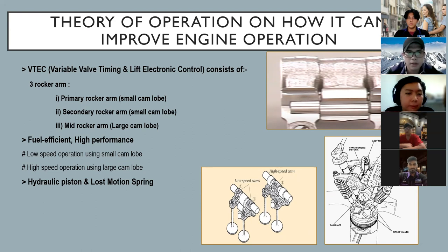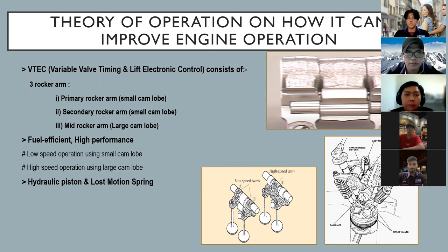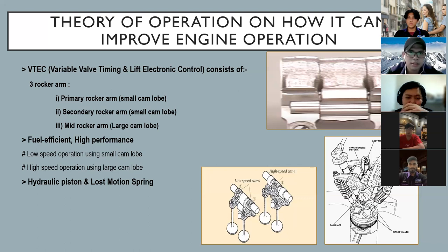The main components involved in this operation are the hydraulic piston and lost motion spring, which operate together to transition all the rocker arms between cam lobes using the piston exchange transition. That's all from me, thank you.